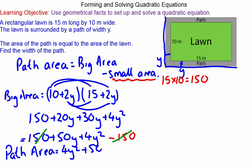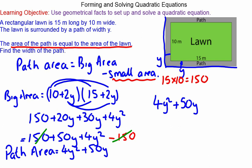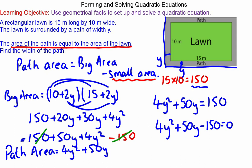We're told in the question that the area of the path equals the area of the lawn. So 4y² + 50y = 150. Rearranging to make the quadratic equal zero: 4y² + 50y - 150 = 0. Dividing through by 2 gives 2y² + 25y - 75 = 0.